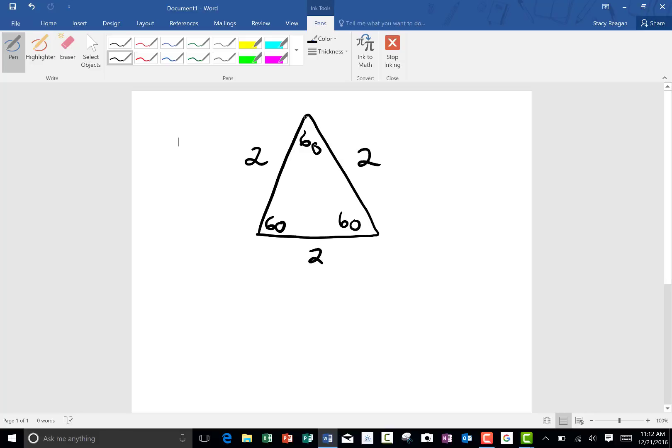Now if I split this angle in half and I draw straight down perpendicular, this would make this 90 degrees and this would make this one 30 degrees because it's in half. So now we have a 30-60 degree triangle.